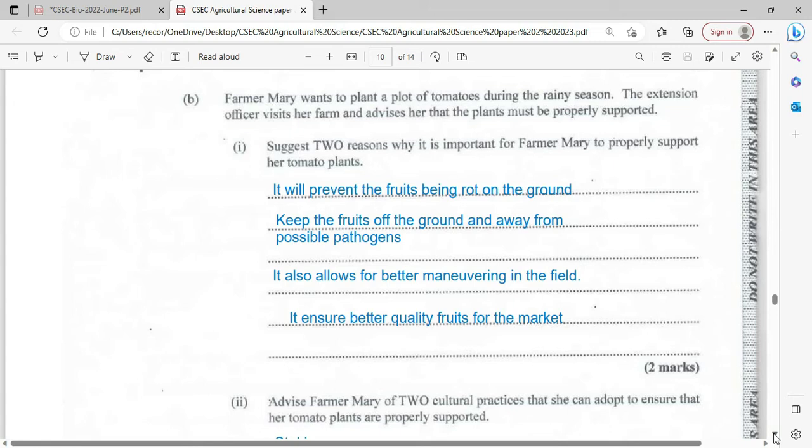There's two reasons why it is important for Farmer Mary to properly support plants. The support will prevent the fruits from being rotted on the ground due to the exposure of the dirt and the water and possible pathogens. It will keep the fruit off the ground and away from possible pathogens. It also allows for better maneuvering in the field.